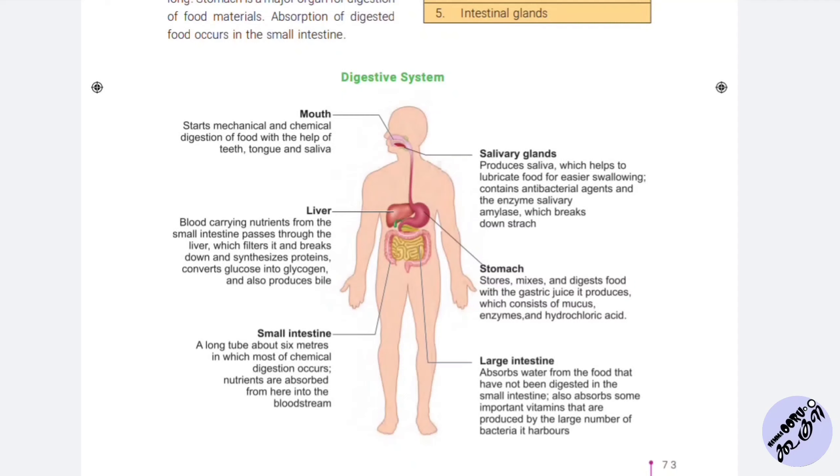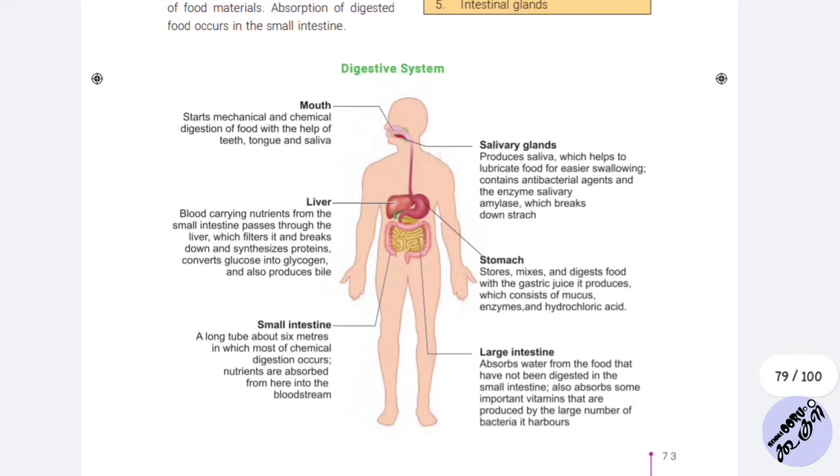The salivary glands produce saliva which helps to lubricate food for easy swallowing, containing antibacterial agents and the enzyme salivary amylase which breaks down starch in food.